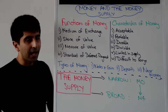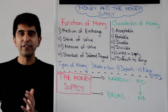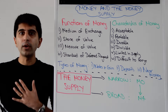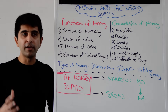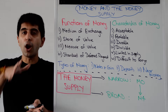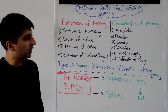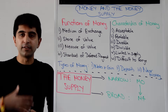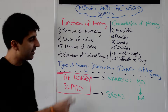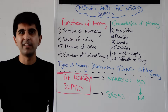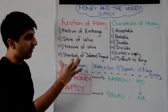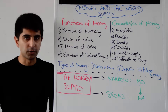Money also has to act as a standard of deferred payment. This is really important, whereby people who don't have money right now can borrow it from those that do, meaning they can pay it back over time. So people without money now can still buy goods and services, paying back at a later date. This is the idea of bringing lenders and borrowers together — very important when it comes to financial markets.